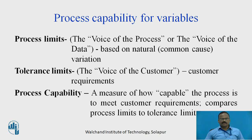Process Capability for Variables. Process Limit, which is also called as the voice of the process or the voice of the data, is based on natural, that is common cause of variation. As seen in the last video, variability is bound to happen in the process — it could be due to material, machines, man, or equipment. So the process limit is the voice of the process or voice of the data, based on different causes of variation.